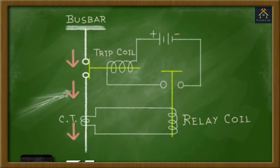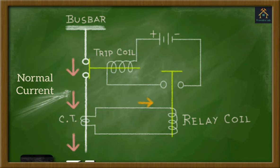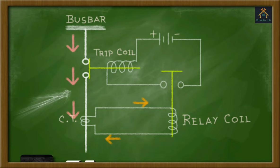Assume that normal current is flowing through the line from the bus bar. As a result, a small amount of current is flowing through the CT and relay coil. Then, the magnetizing power of the relay coil is very low to attract the relay coil plunger. This is the normal condition.